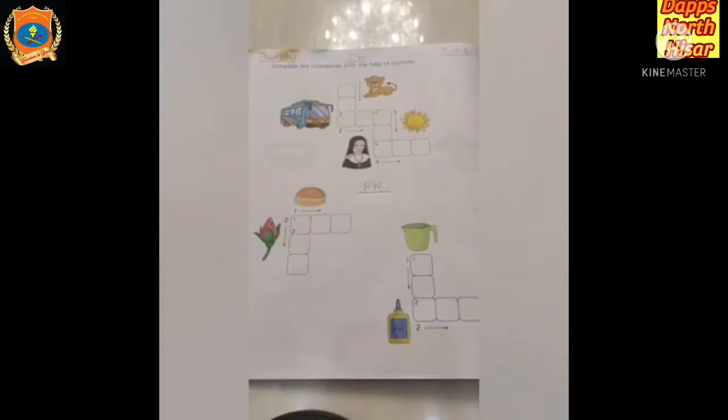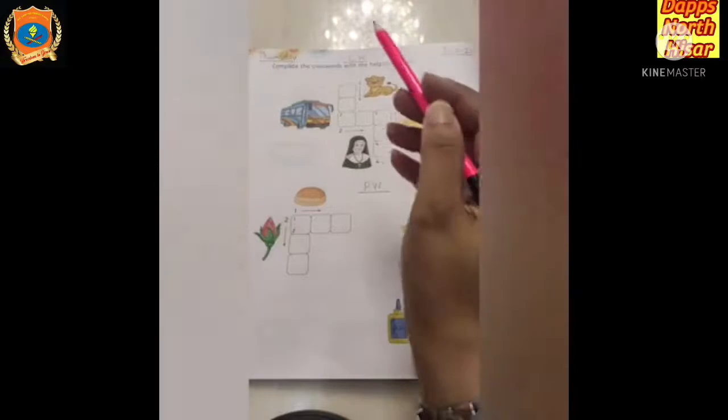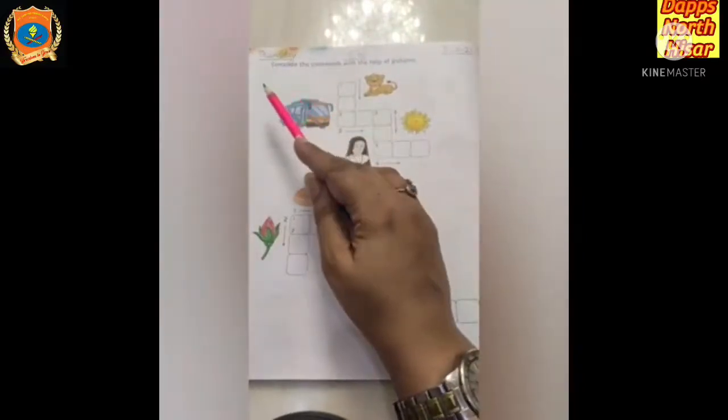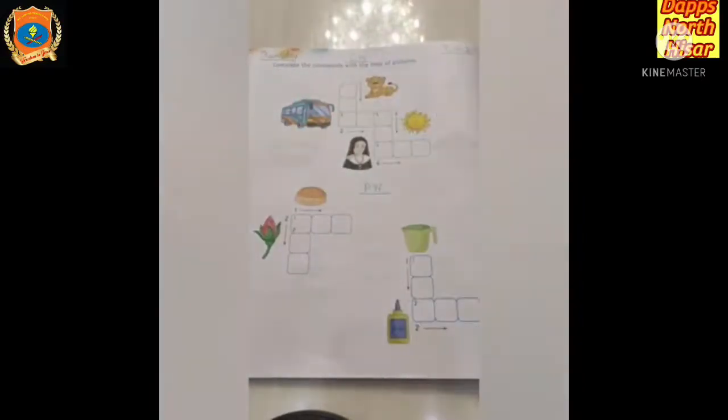So let's start. We will do this exercise in our English book. We will write today's day that is Thursday, classwork and the date 7th October 2021.